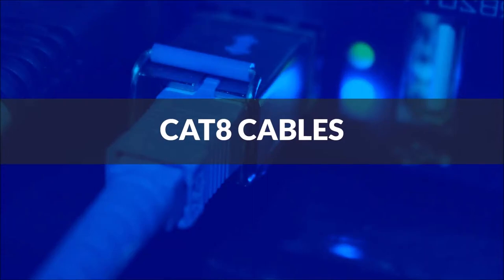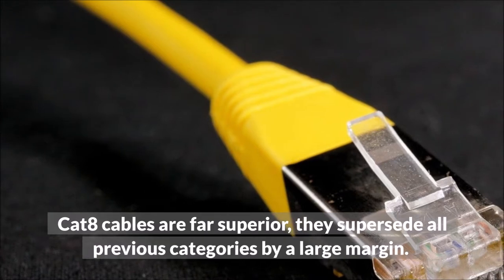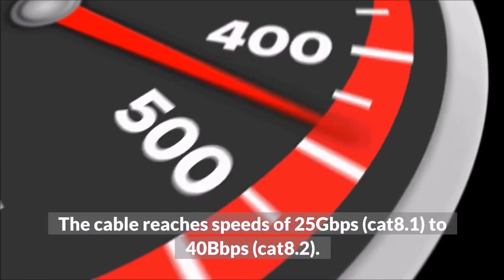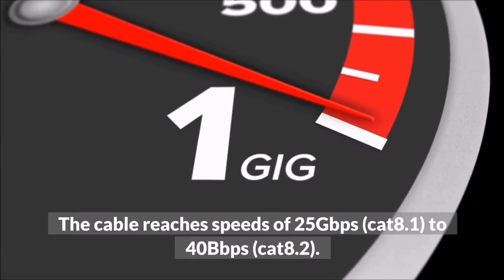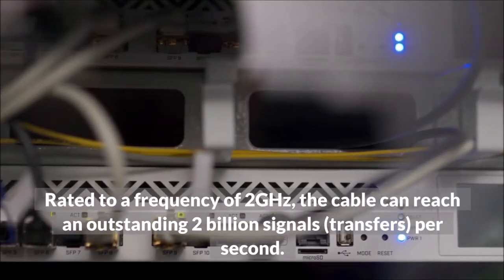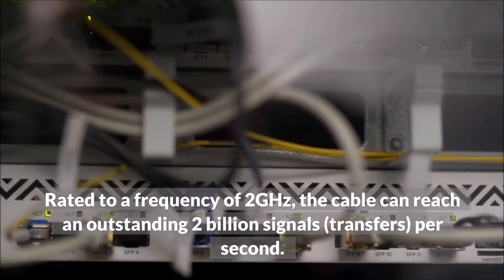CAT-8 cables. CAT-8 cables are far superior, they supersede all previous categories by a large margin. The cable reaches speeds of 25 Gbps, CAT-8.1, to 40 Gbps, CAT-8.2. Rated to a frequency of 2 GHz, the cable can reach an outstanding 2 billion signals, or transfers, per second.